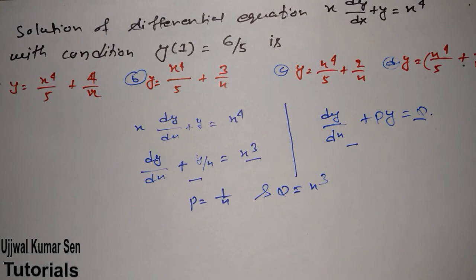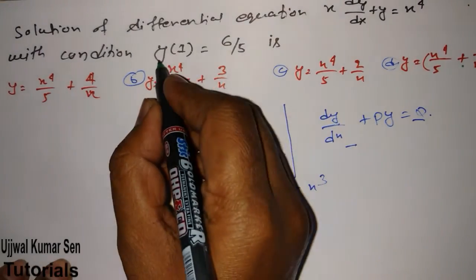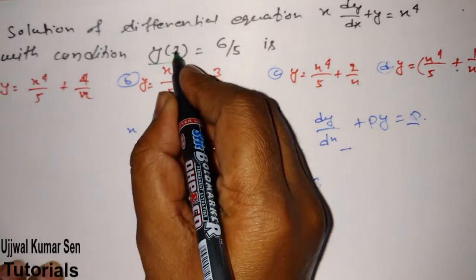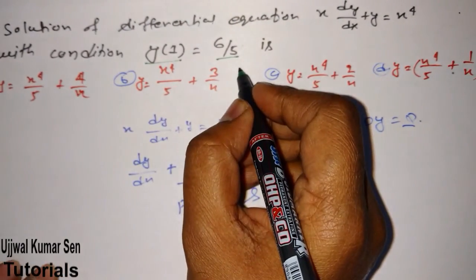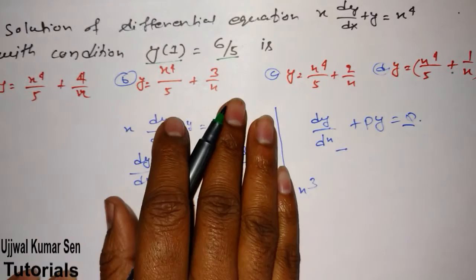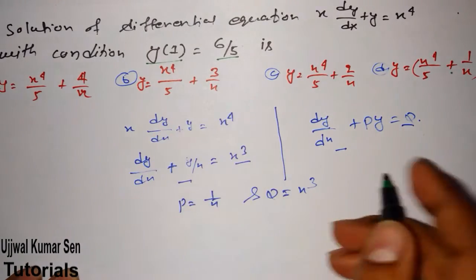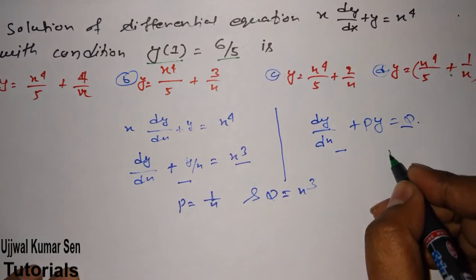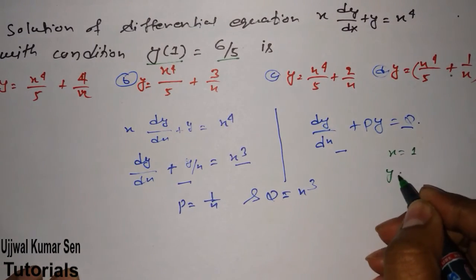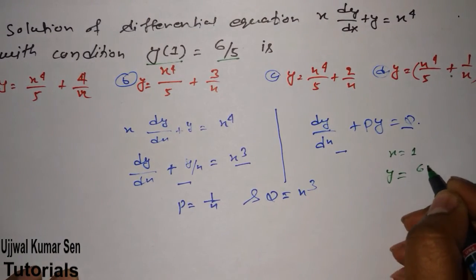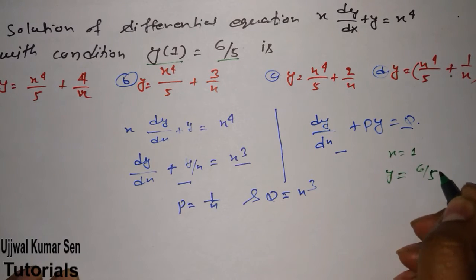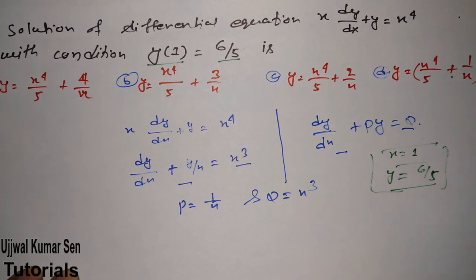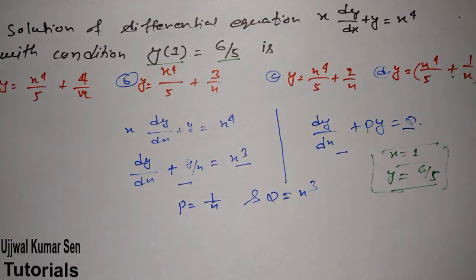In this question, we are also given a condition: y(1) = 6/5. What does this mean? It means when x = 1, y = 6/5. This is important because it will help us find the value of the constant term C.